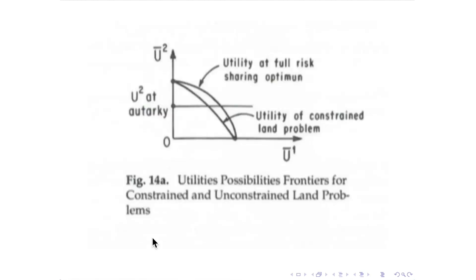In utility space: if there were no constraint, we'd have the outer frontier — full risk sharing. In the constrained problem limited to dividing up land by shares, that constrained Pareto frontier is interior but still concave. The question is how close the inner frontier gets to the outer frontier. I solved the problem numerically. The solution is that household one has about 72% of type-one land and about 25% of type-two land; household two has the other quarter and three-quarters respectively.